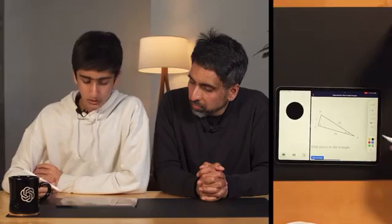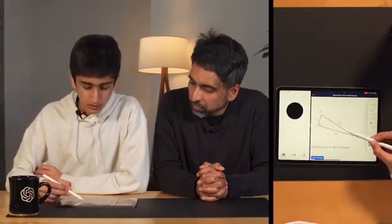All right, so I'm pretty sure this is the angle alpha right here, right? Correct. Now, looking at the triangle, which side do you think is the hypotenuse?